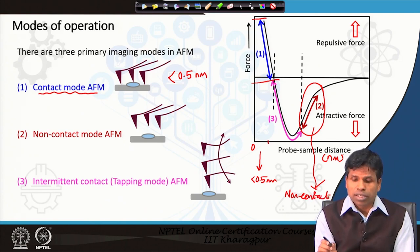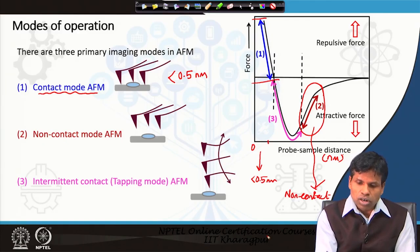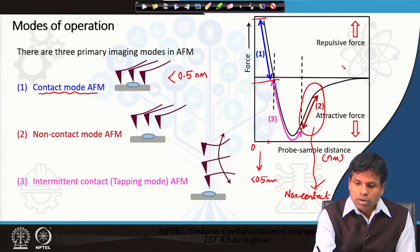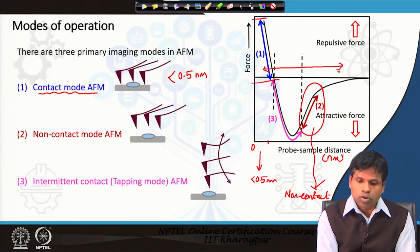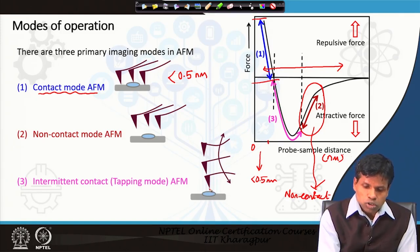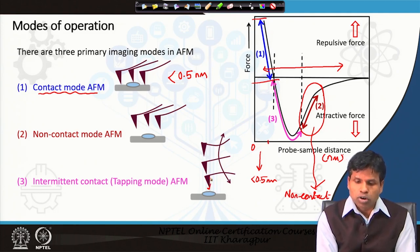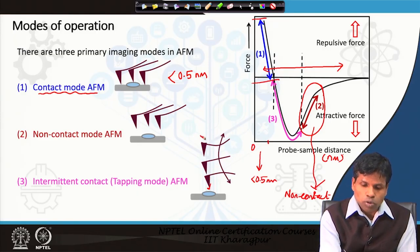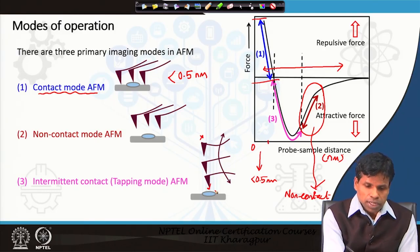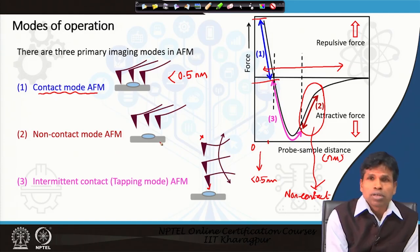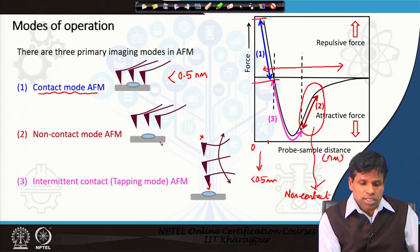Between contact and non-contact mode is the intermediate region called tapping mode. The tip goes from the attractive to the repulsive region — it goes close to the sample into the repulsive force region, then goes back upward where there is no force, oscillating forward and backward above the sample. This is called intermittent contact or tapping mode. In non-contact mode the tip-sample separation is more than about 2 nanometers, where attractive force predominates.